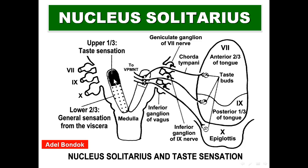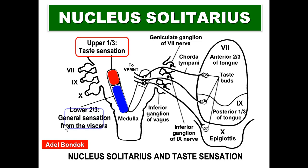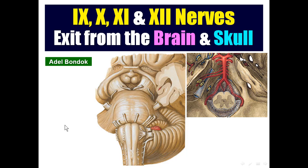The upper third of nucleus solitarius is responsible for taste sensation from the tongue and the epiglottis. It receives fibers from the facial nerve carrying taste from the anterior two thirds of the tongue, from the glossopharyngeal nerve carrying taste from the posterior third of the tongue, and from the vagus nerve carrying taste from the most posterior part of the tongue and the epiglottis. The lower two thirds receives general sensations from the viscera supplied by the glossopharyngeal and vagus nerves.